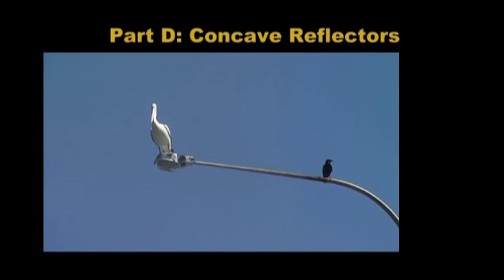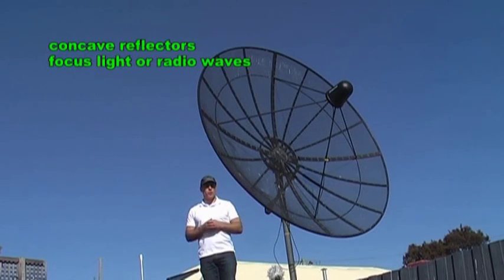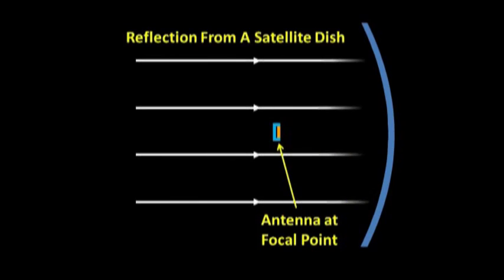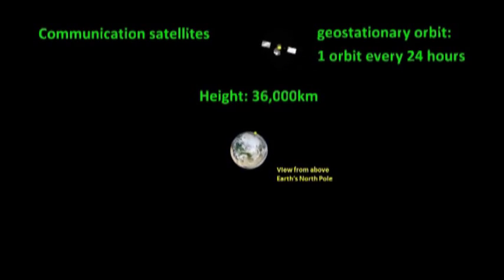Part D covers concave reflectors such as those used in satellite dishes. Concave reflectors can focus light and radio waves into a focal point, which makes them very useful for long-range communications and for solar cookers.